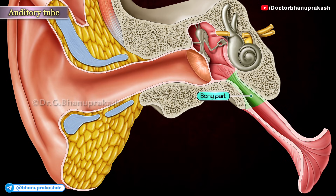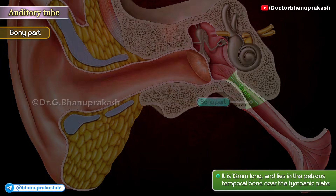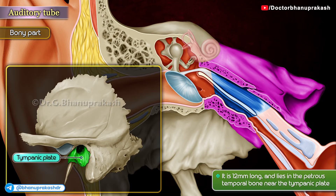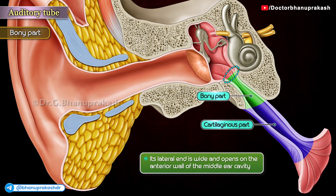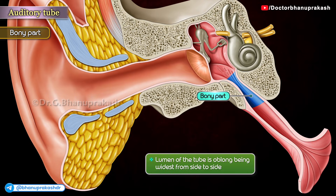The tube is divided into bony and cartilaginous parts. The bony part forms the posterior and lateral one-third of the tube. It is 12 mm long and lies in the petrous part of the temporal bone near the tympanic plate. Its lateral end is wide and opens onto the anterior wall of the middle ear cavity. The medial end is narrow and jagged for attachment of the cartilaginous part. The lumen of the tube is oblong, being widest from side to side.